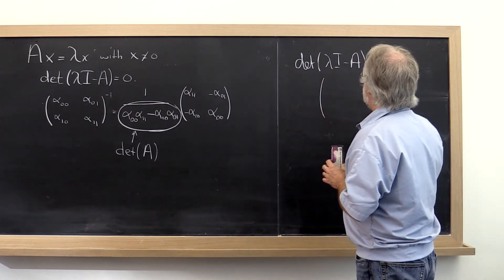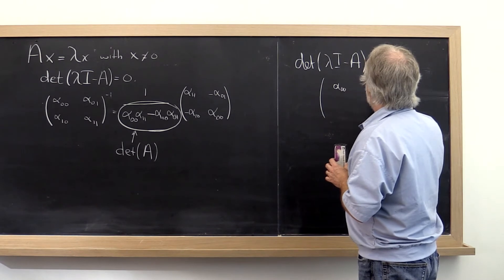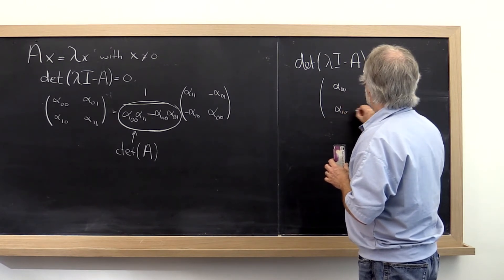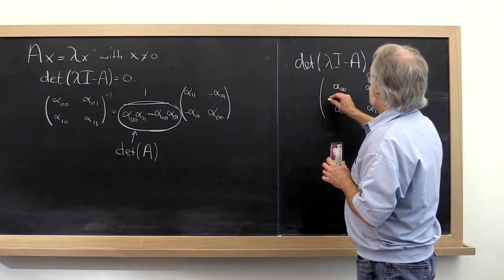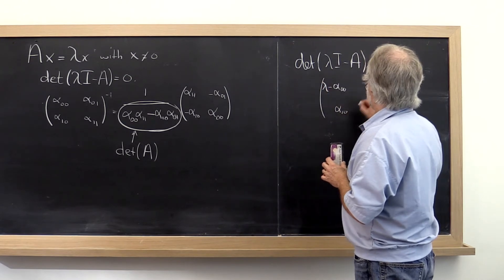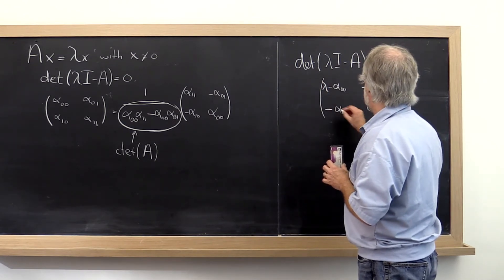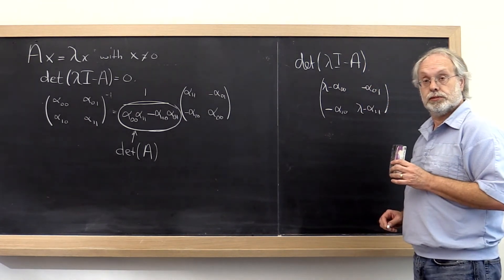Well, if we start with the matrix alpha 0,0, alpha 0,1, alpha 1,0, alpha 1,1, then this matrix here is the matrix lambda minus that, minus that, minus that, and lambda minus that, right?